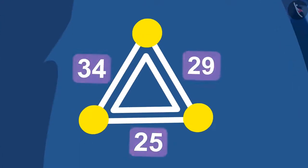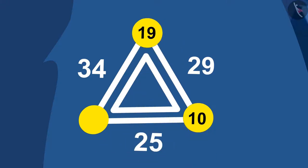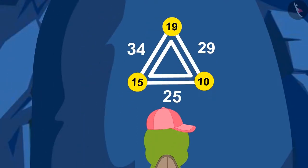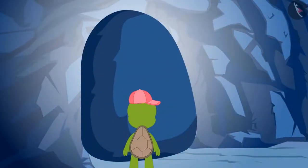Now, Tufan saw the numbers written on the side of the triangle. He noticed that on the side on which the number is 29, he can put the numbers 10 and 19 on two corners. And the side which has the number 34 written, he can put the numbers 19 and 15. In this way, Tufan put all the numbers in their correct places. Tufan's answer was absolutely correct. The first door of the cave opened.